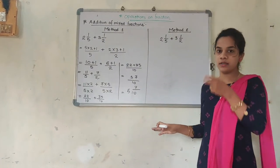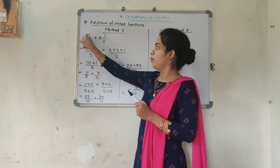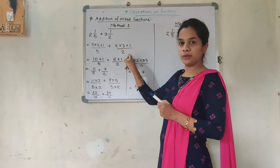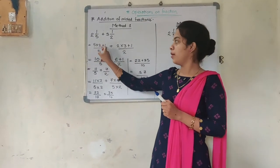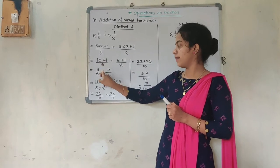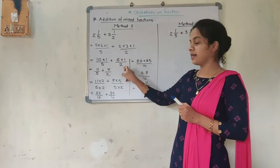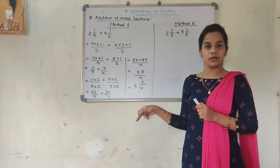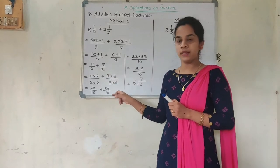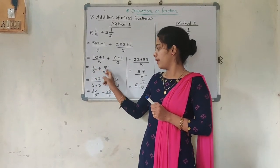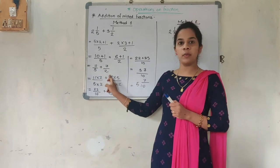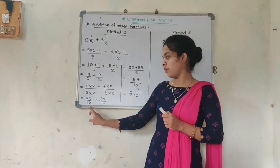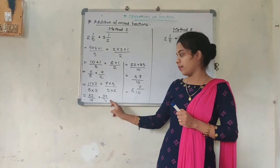The denominators were not common, so we made them common by cross multiplication: 11 into 2 plus 7 into 5, both having denominator 5 into 2. This gave us 22 upon 10 plus 35 upon 10. Then we added the numerators: 22 plus 35 is 57 upon 10. We divided and got the integer part 5, remainder 7 — so the answer is 5 and 7/10.